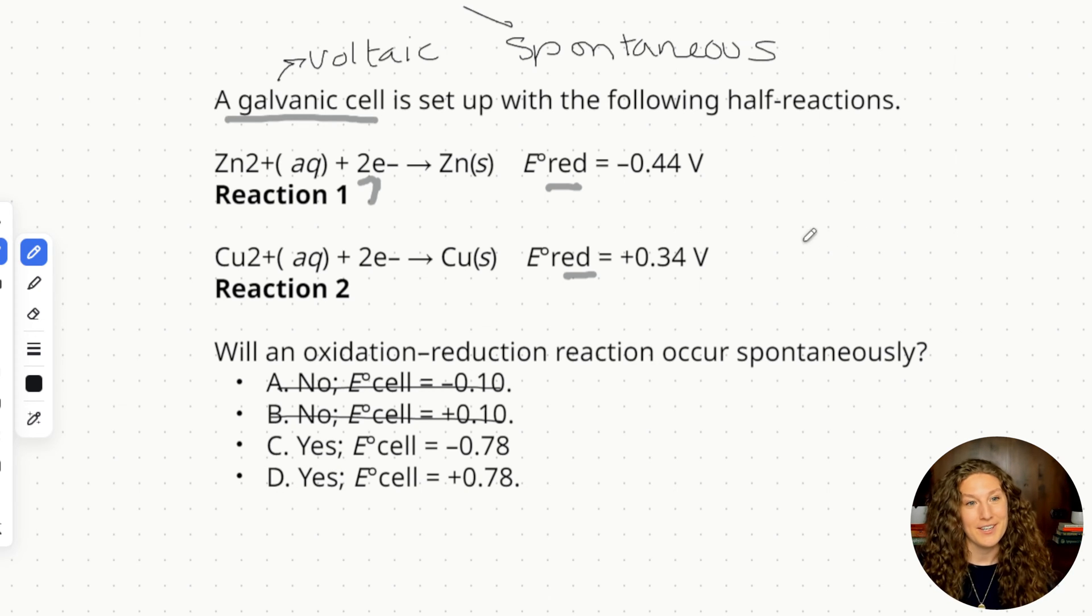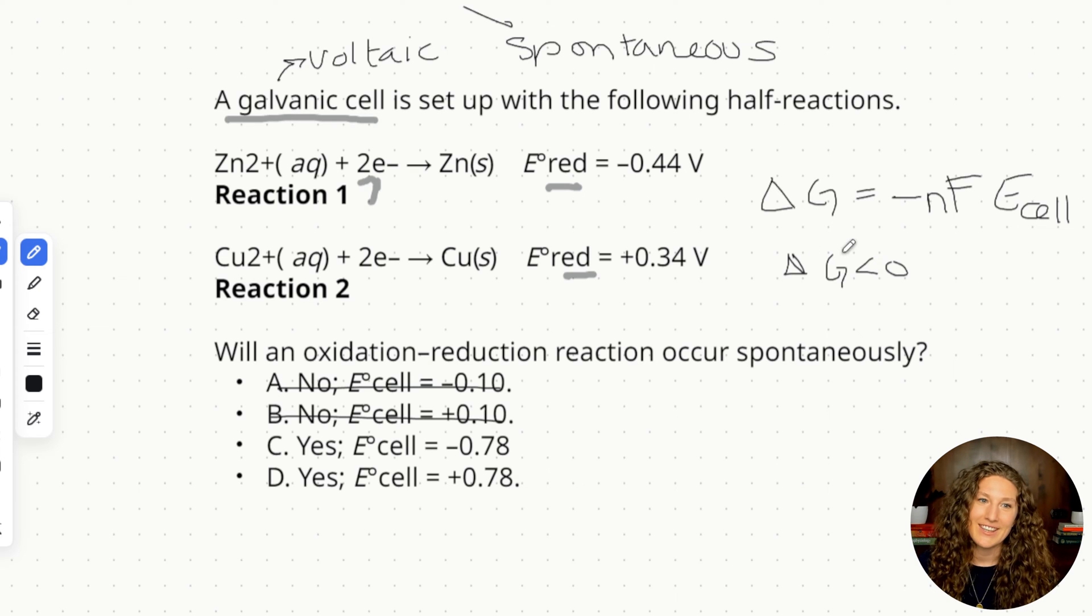And now our second secret rule is based on an equation which is our derivative of our Nernst equation where delta G, free change in energy, is equal to negative NF E cell, the overall cell potential. So if we need our cell to be spontaneous our delta G needs to be less than zero. So it needs to be less than zero and in order for delta G to be less than zero according to this equation what does our overall cell potential need to be? It needs to be positive, it needs to be greater than zero. So E cell needs to be greater than zero in order for it to be spontaneous and we know it has to be spontaneous because that's a characteristic of a galvanic or voltaic cell.